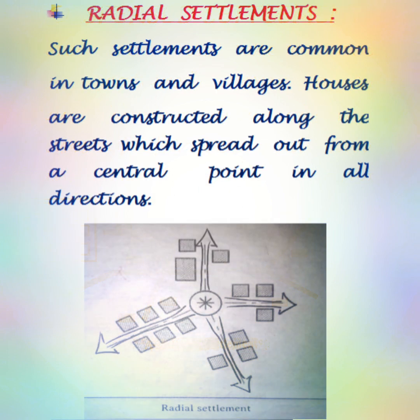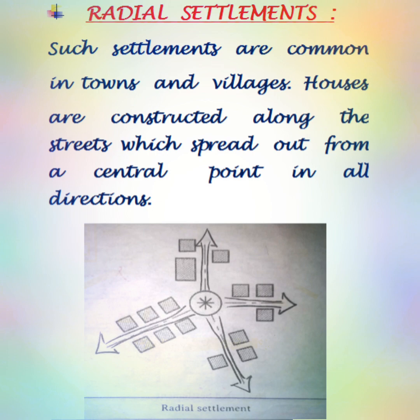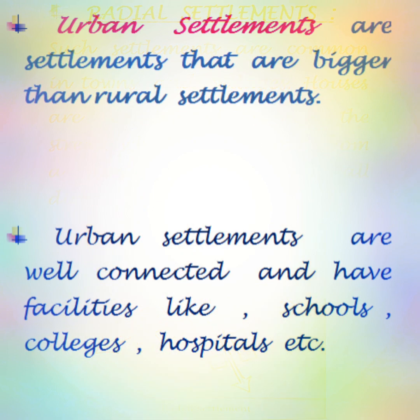The fourth one is radial settlements. Such settlements are common in towns and villages. In this type of settlement, houses are constructed along streets which spread out from a central point in all directions.